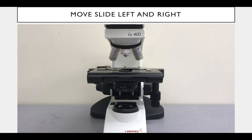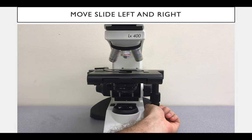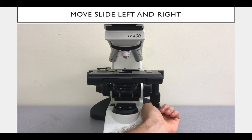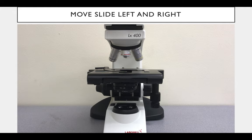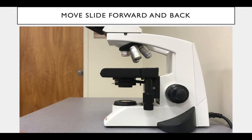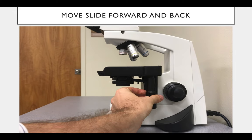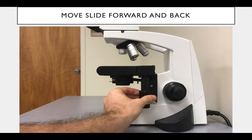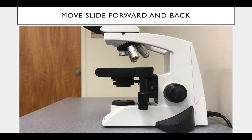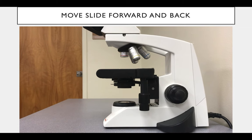You can move the slides left and right using these adjustment knobs — notice how that is moving up there. And then you can move the slide forward and backward using the adjustment knobs, so you can place it perfectly underneath the light to see exactly what you want.